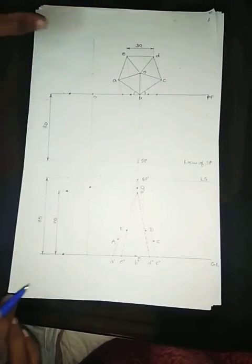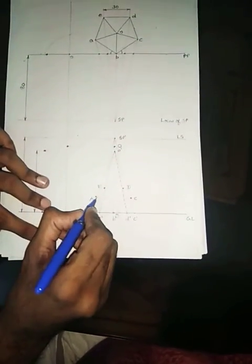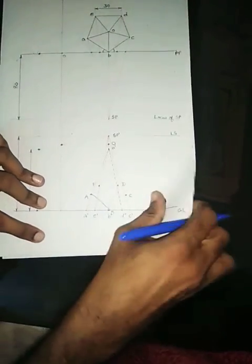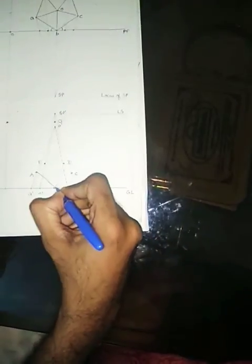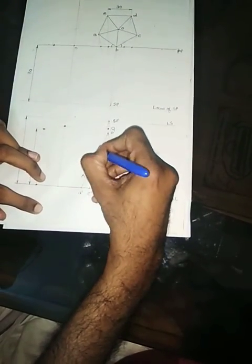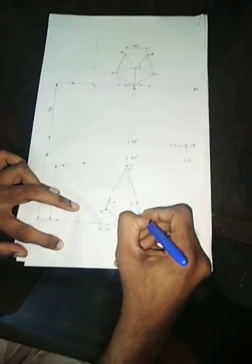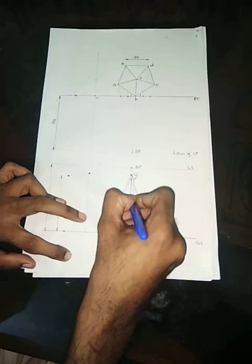And as usual you join all the points. First you have to join all the outermost lines. AB will be dark. Then comes BC, AO, OC. Okay, and OB also will be visible. This much lines will be visible.